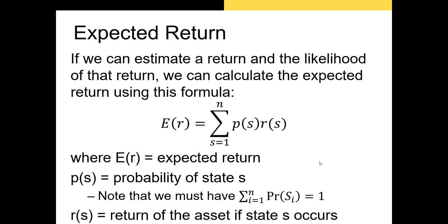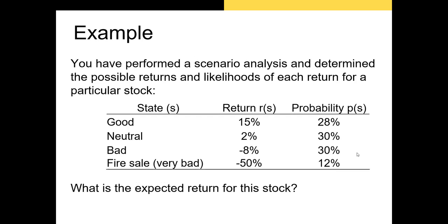Now notice here that we have to ensure that the probability of all states sums to one. If it doesn't, we've got some issues. Let's go through an example really quickly to illustrate this.